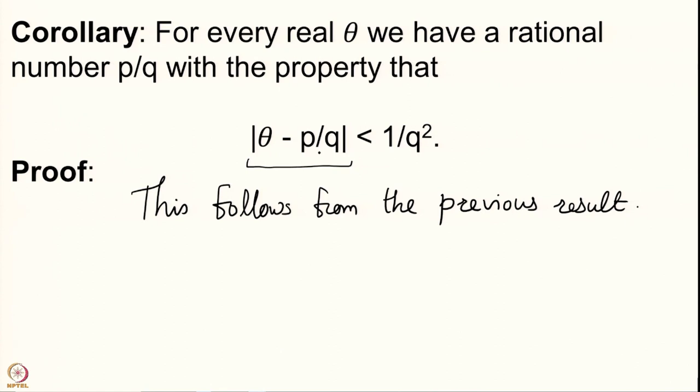If theta is an irrational number, then there are infinitely many such good approximations. On the other hand, if your number happens to be rational, then there are only finitely many such approximations. This dichotomy, and further the study of continued fractions giving us such nice approximations, will be done in the next lectures. See you then. Thank you very much.